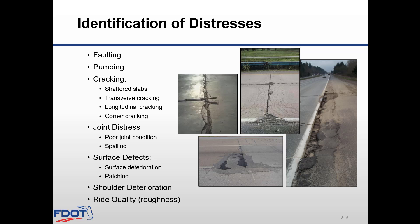The Pavement Conditions Survey Manual includes information on the following signs of distress: faulting, pumping, cracking, shutter slabs, transverse cracking, longitudinal cracking, corner cracking, joint distresses, poor joint condition and spalling, surface defects such as surface deterioration and patching, shoulder deterioration, and ride quality.